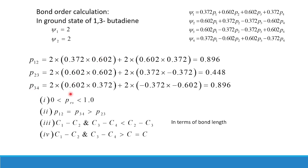P34 can also be calculated. For ψ1, which has two electrons, the coefficients of p3 and p4 are 0.602 and 0.372. For ψ2, those coefficients are −0.372 and −0.602 respectively. When calculated, P34 comes out to be 0.896.